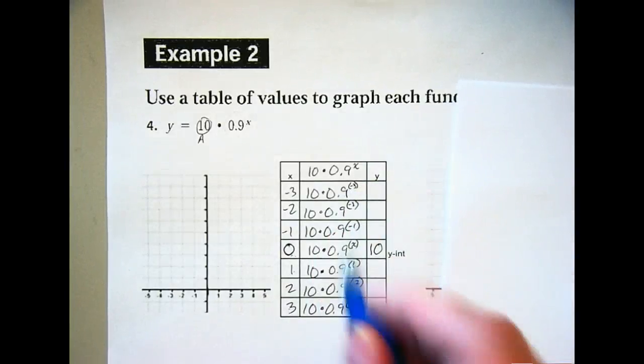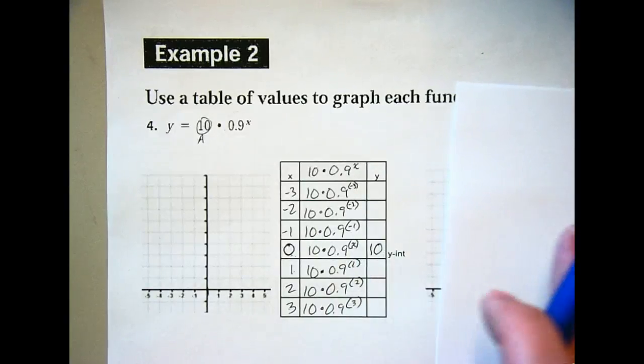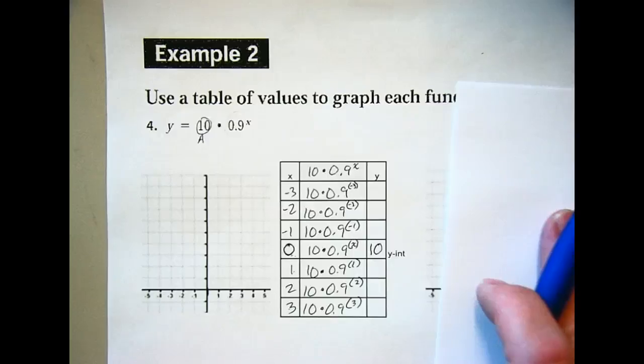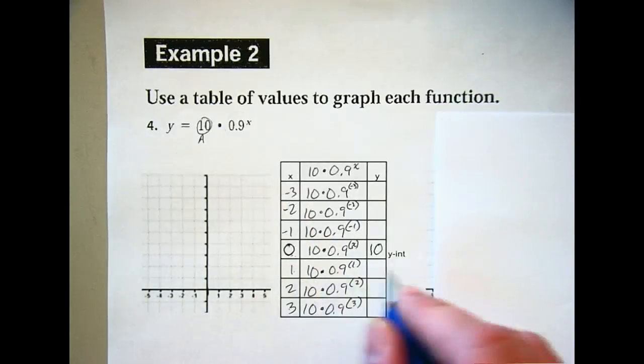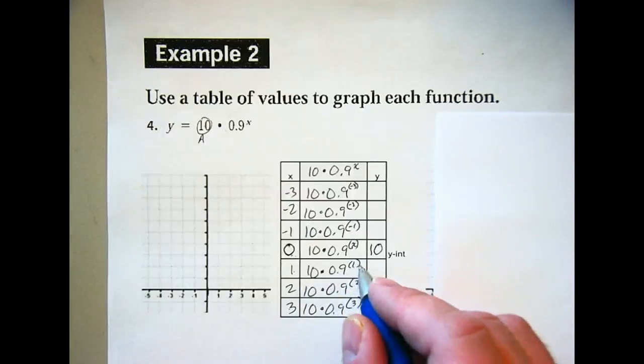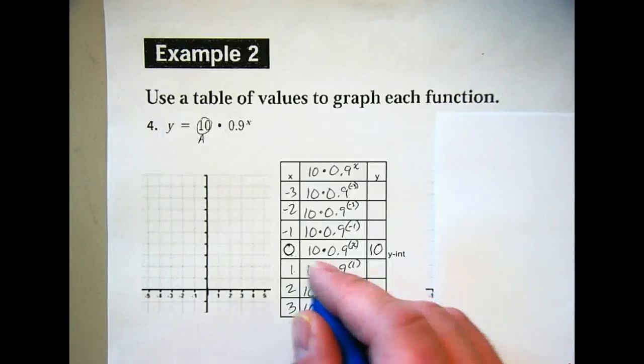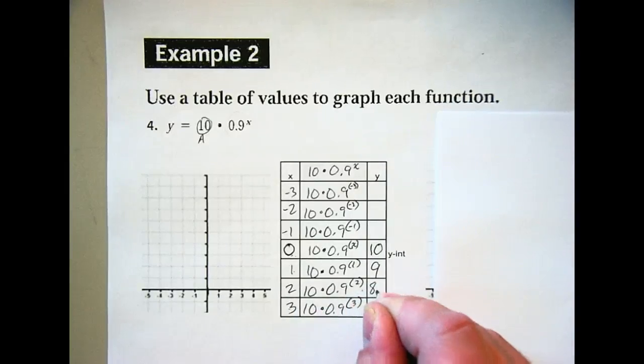How many of you are just cranking those out on your calculator? You just keep changing it. Okay, how many of you are using your table feature on your calculator where it does the math and gives you the table? Okay, well, for those of you that are doing it, what do we get right here? Point nine to the first is point nine times ten is nine. Okay, this is point eight one times ten. or did you get eight point one? Okay.